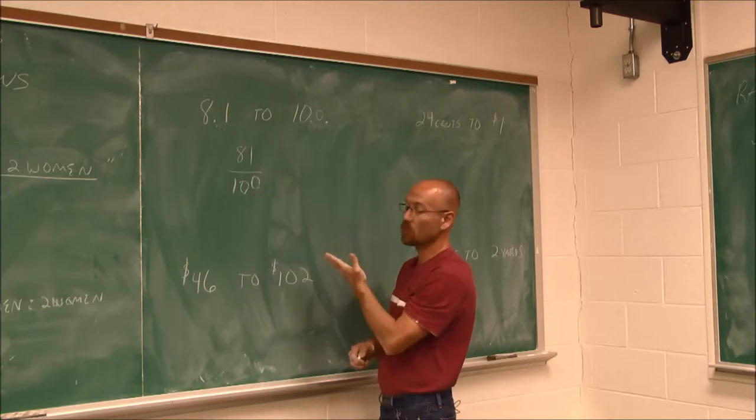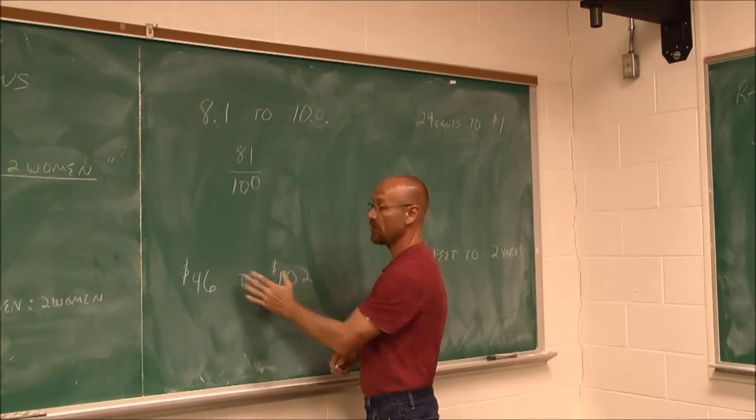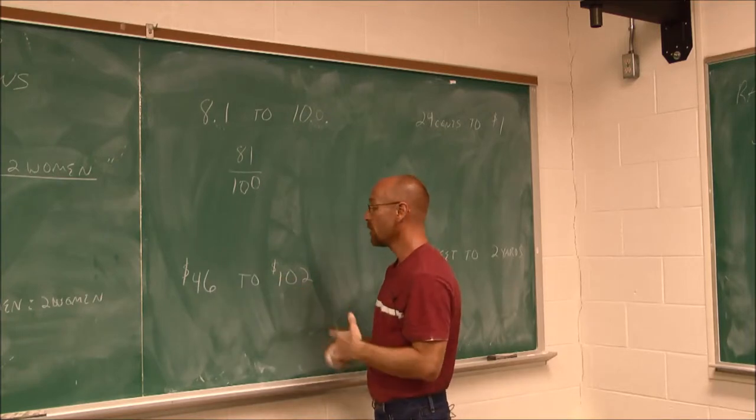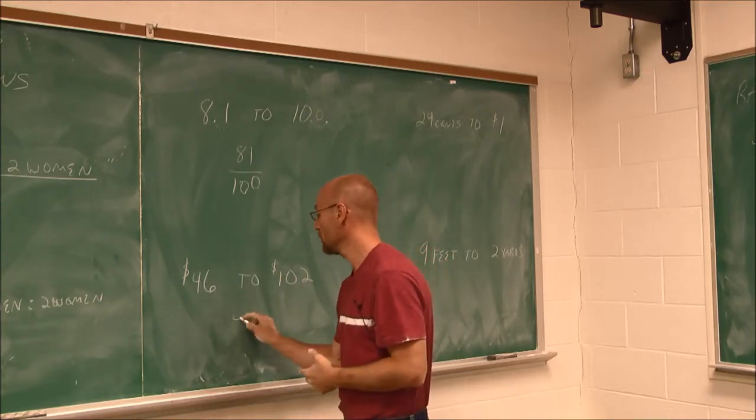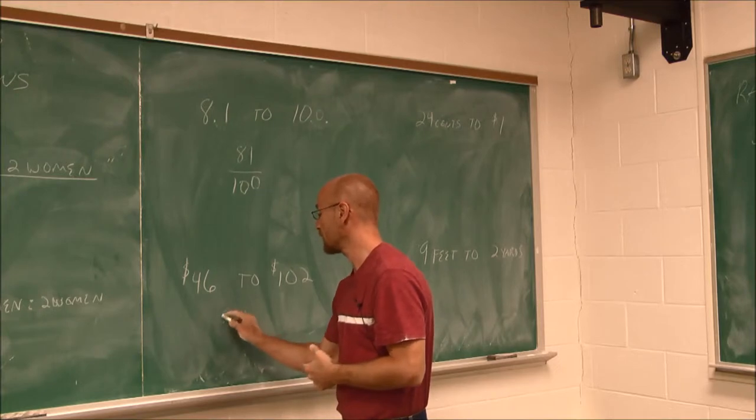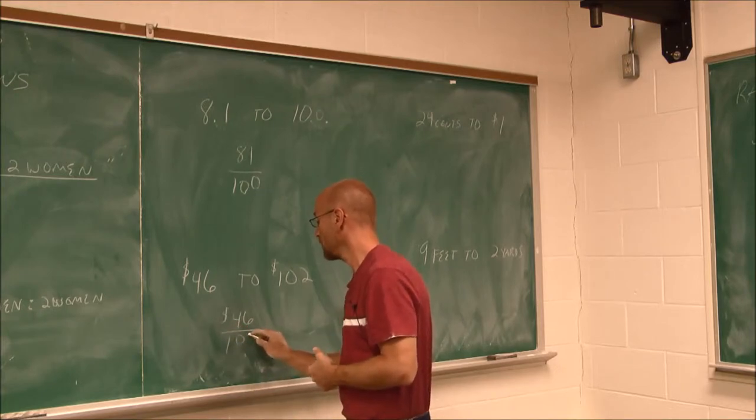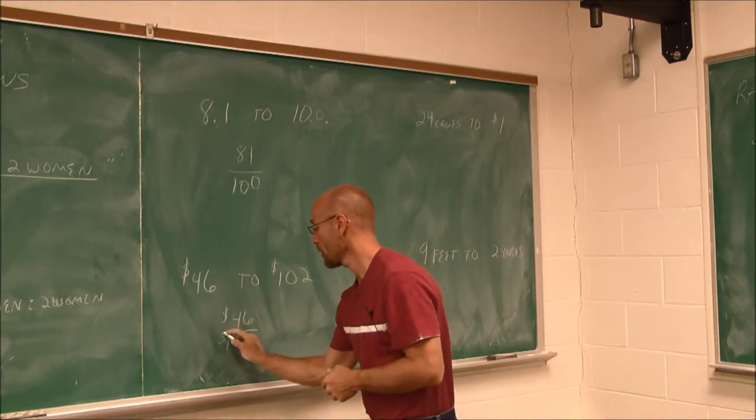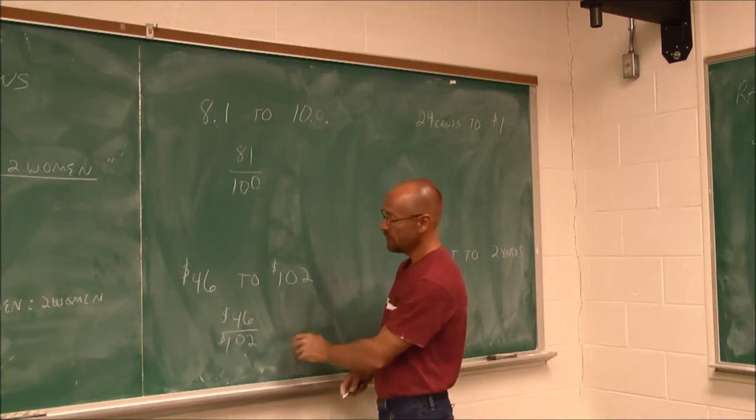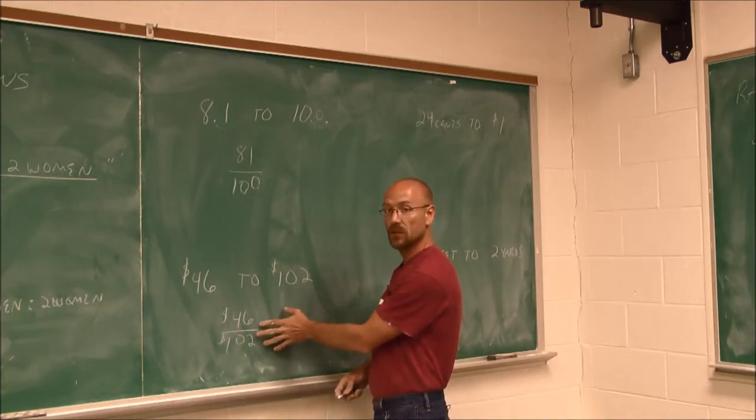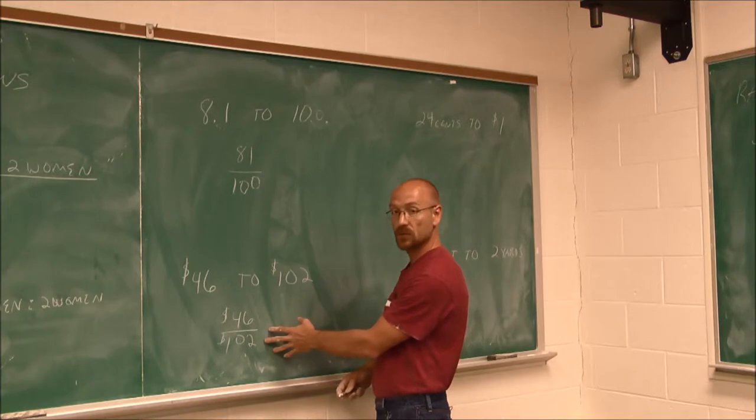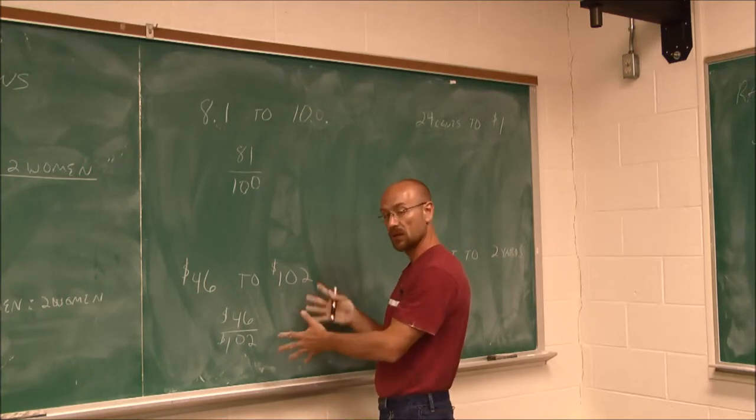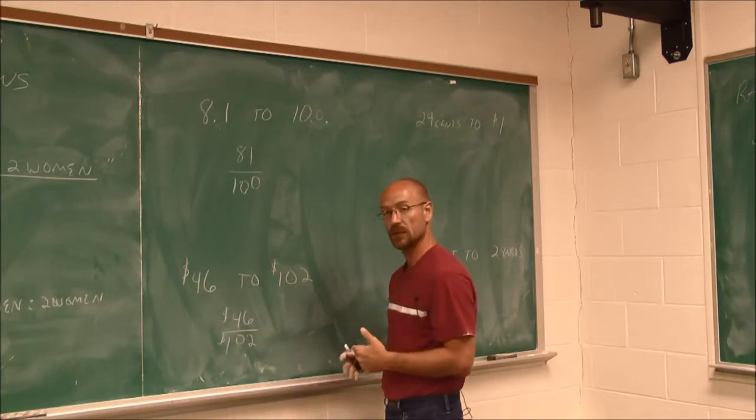Now in this example, there were no units. Now in this example, we do have units. The units here is dollars. We might want to write this as a fraction, $46 to $102. And we'll keep that unit in there. Now this, we can see, reduces. So maybe we want to reduce this ratio to see what is the smallest ratio of one to another in this comparison.